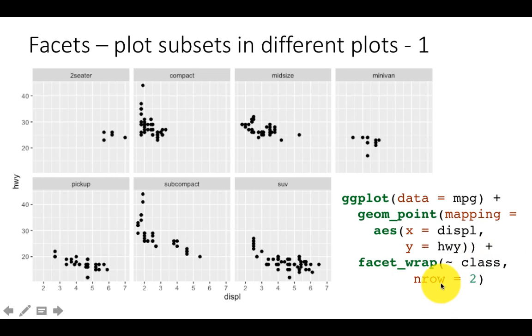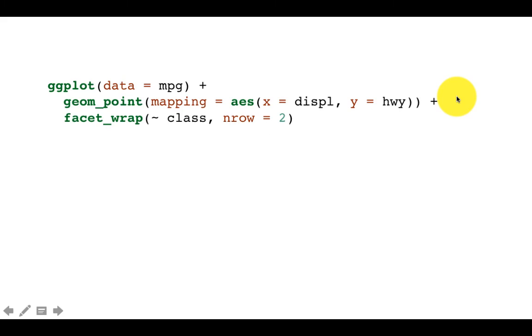Then we're telling it I want you to have two rows in the output, so it's got one row and then a second row. I could have said nrow equals three, or left out nrow altogether in which case it would determine based on available space how many rows of data to have. Or I could have said ncol and it would have determined the number of rows. That's how you do a facet wrap in R Studio in ggplot.